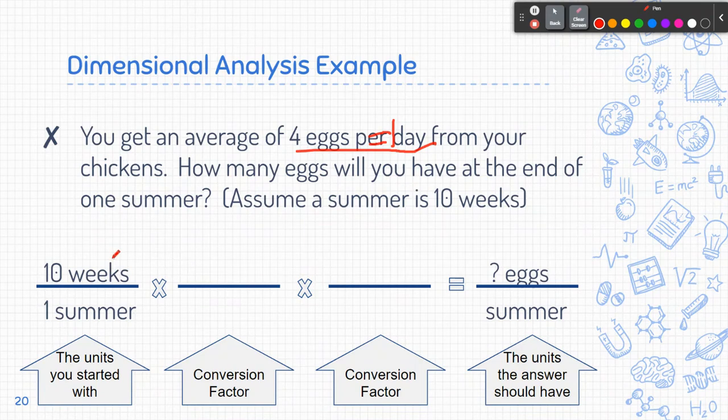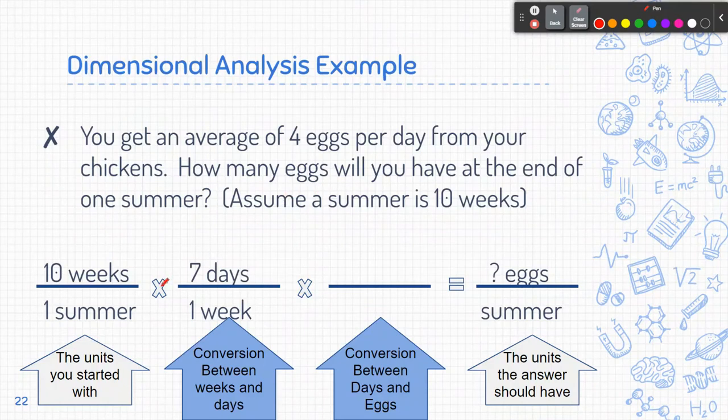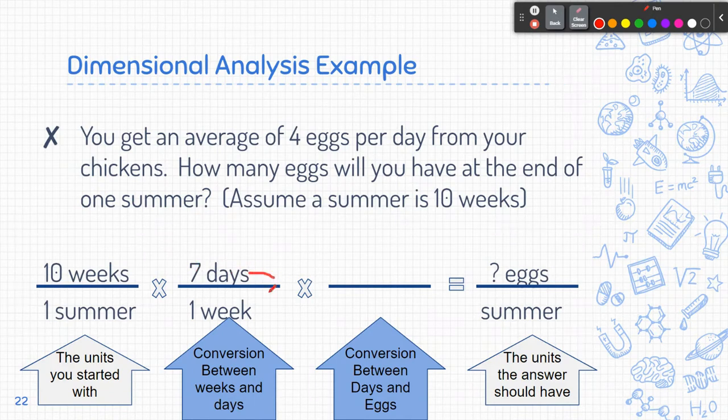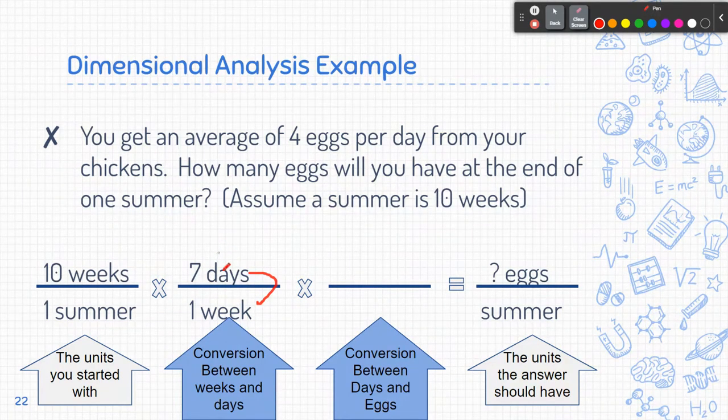So because I have weeks on top, I am going to need to have weeks on the bottom, because I'm going to want this to cancel out. Okay and I know that 7 days is equal to 1 week. So if I have 7 days is one week, these two things are the same. So 7 days is the same thing as 1 week. And it's a little bit weird because you're like, oh the top and bottom are the same. I mean, ish. They're equivalent to each other.